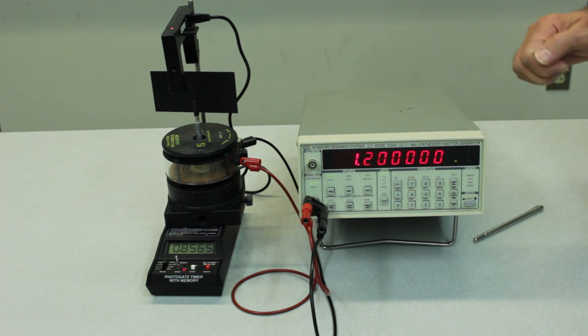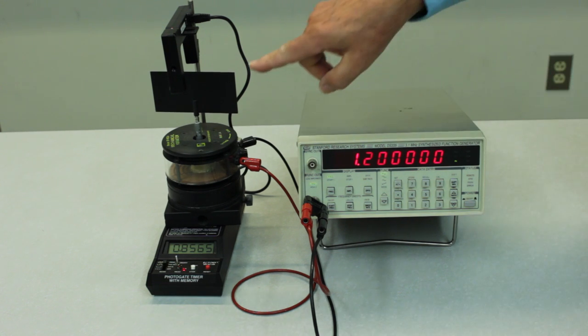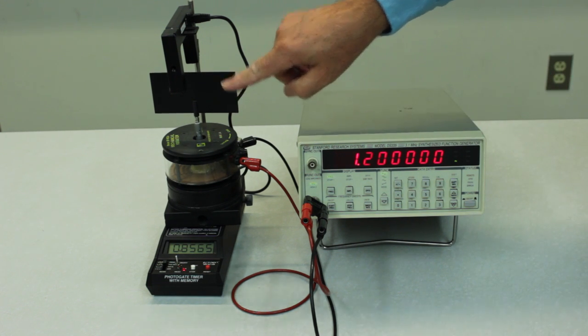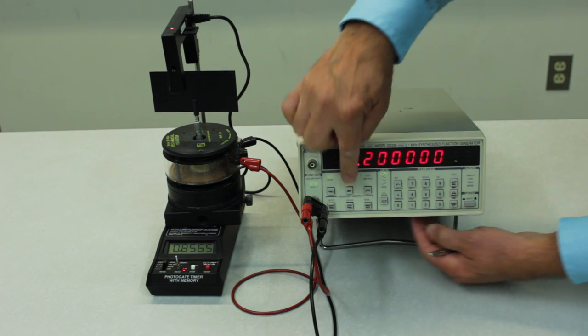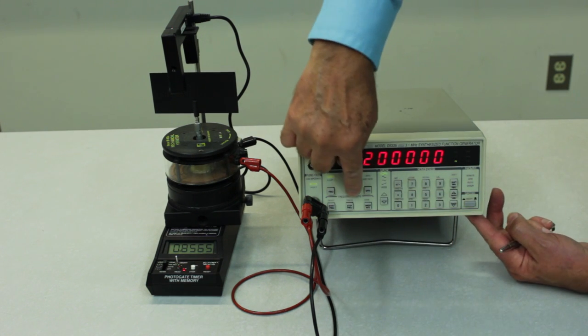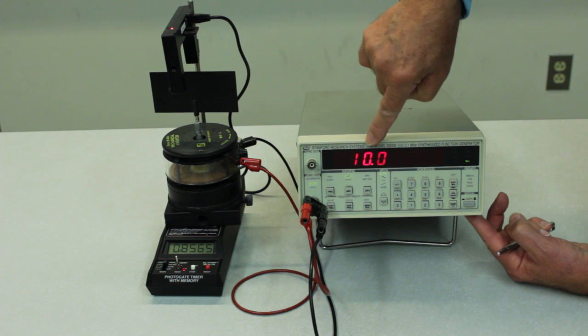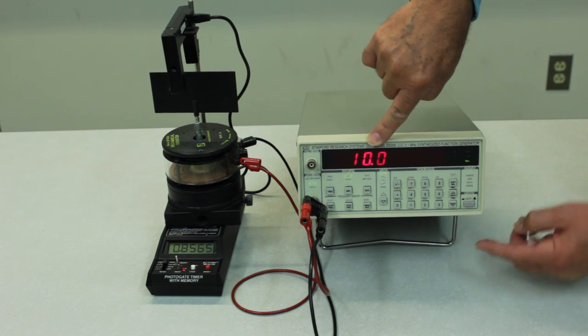So that's a good height. Now the amplitude of this can be set using the amplitude button. So we'll press this button right here. I have it set right now at 10 volts peak to peak.